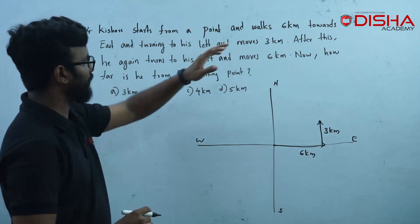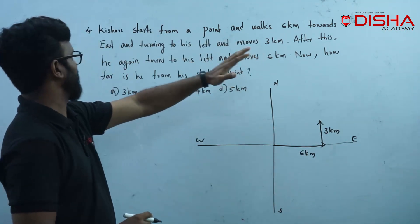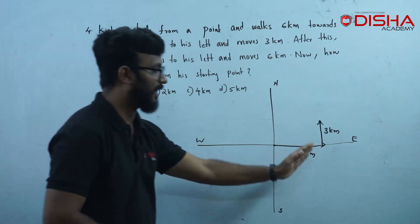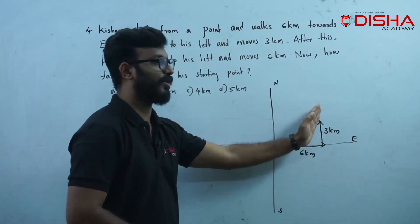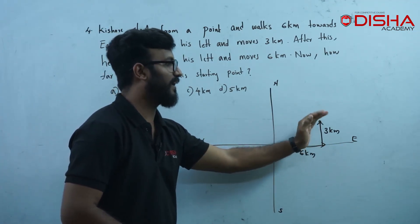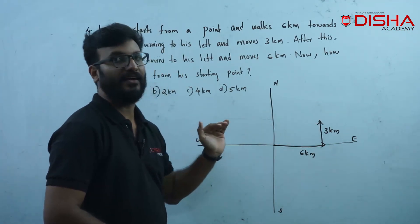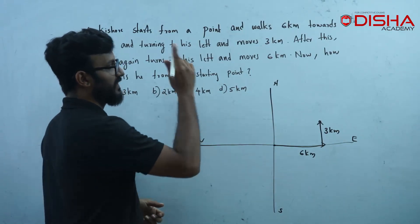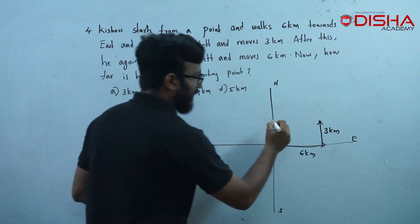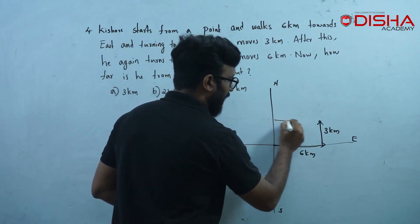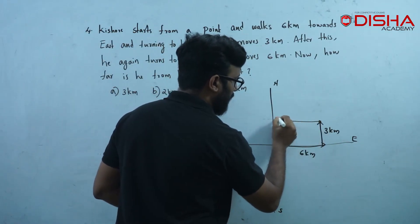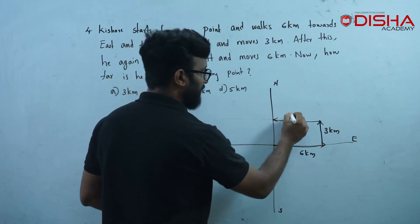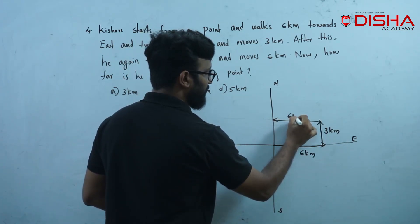After this, he turns to his left. Kishore goes north and moves 6 km. Then Kishore moves 6 km back.